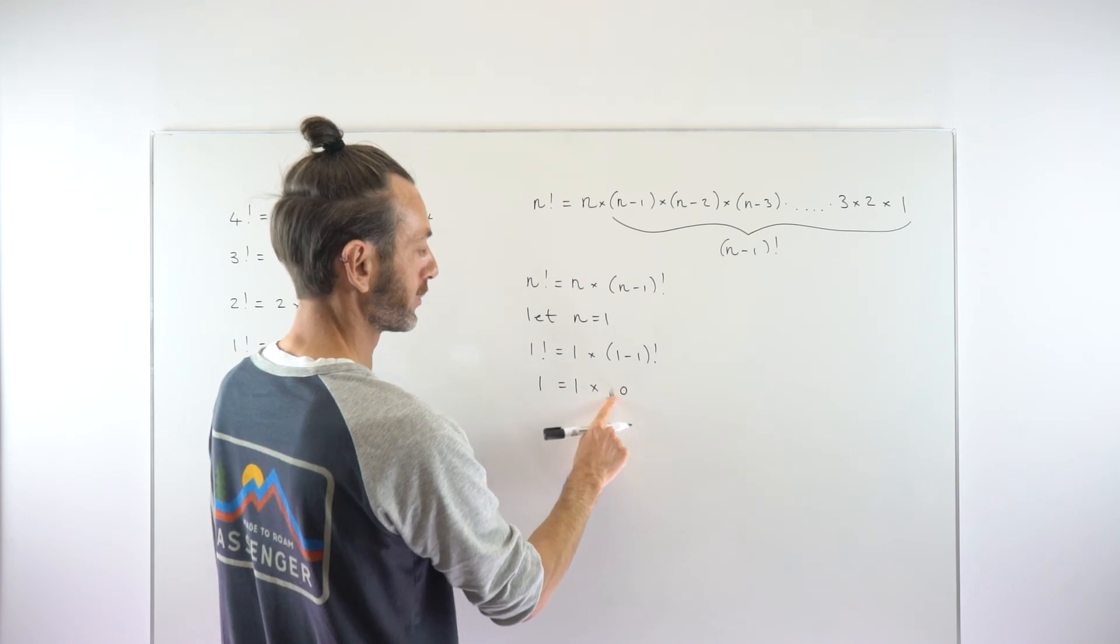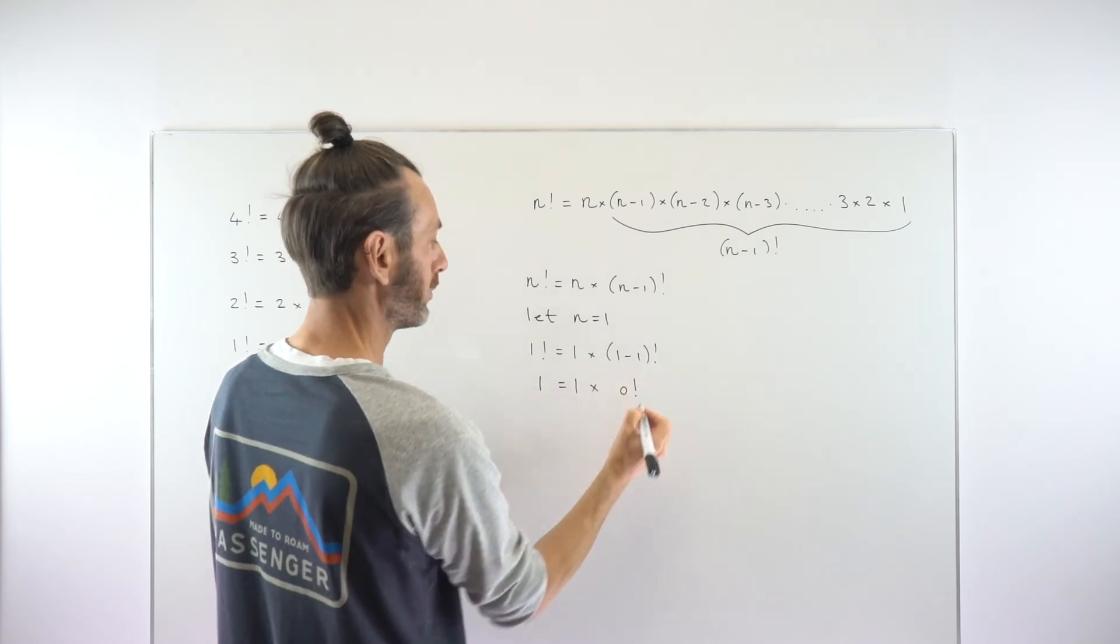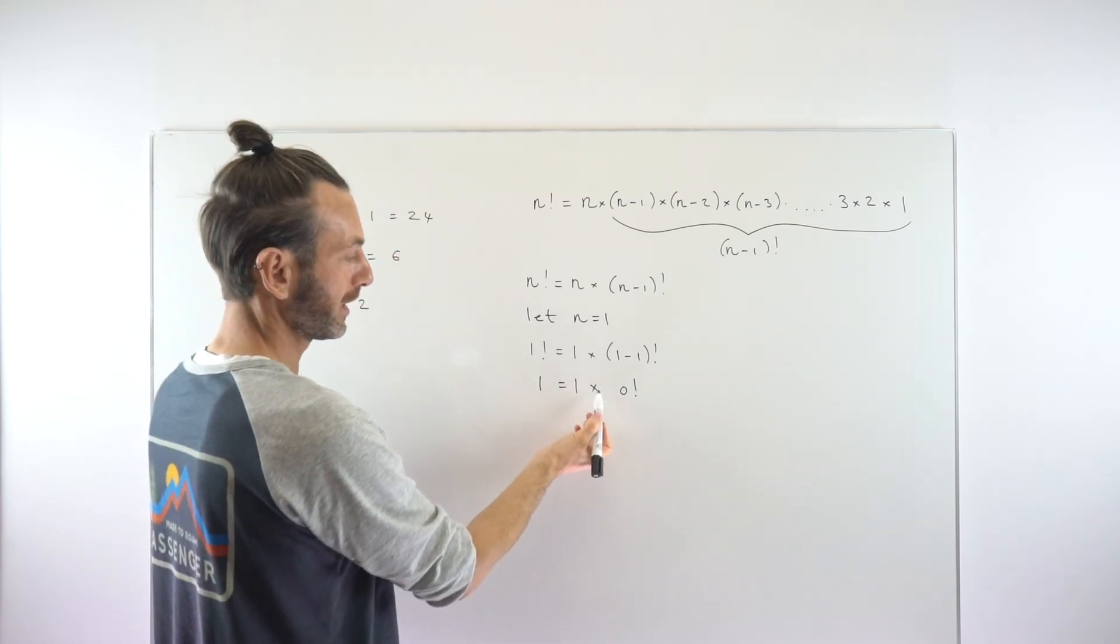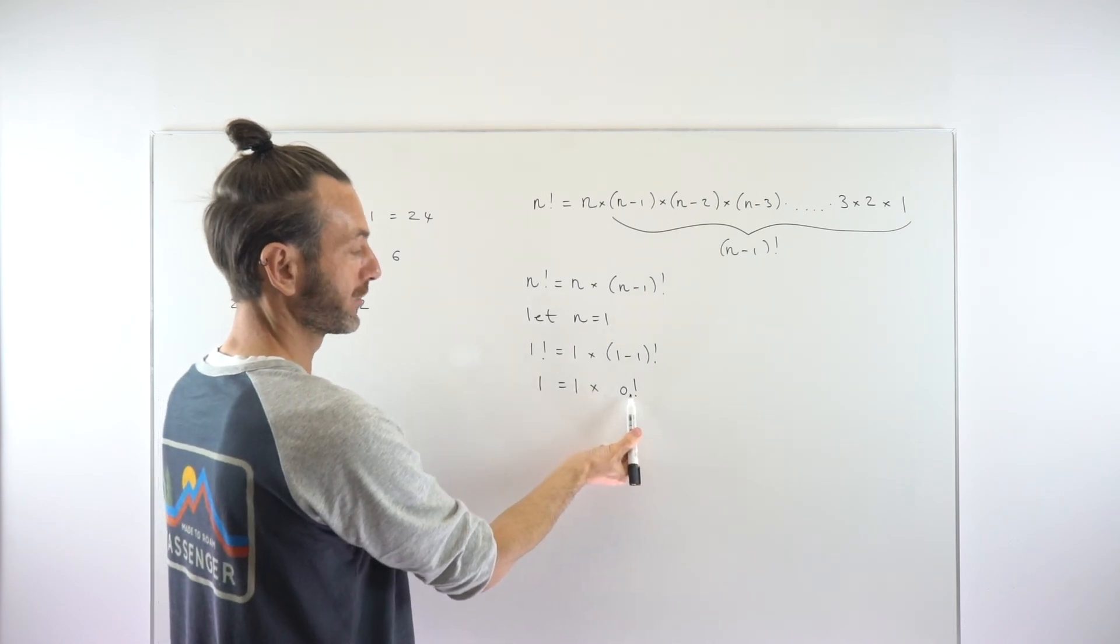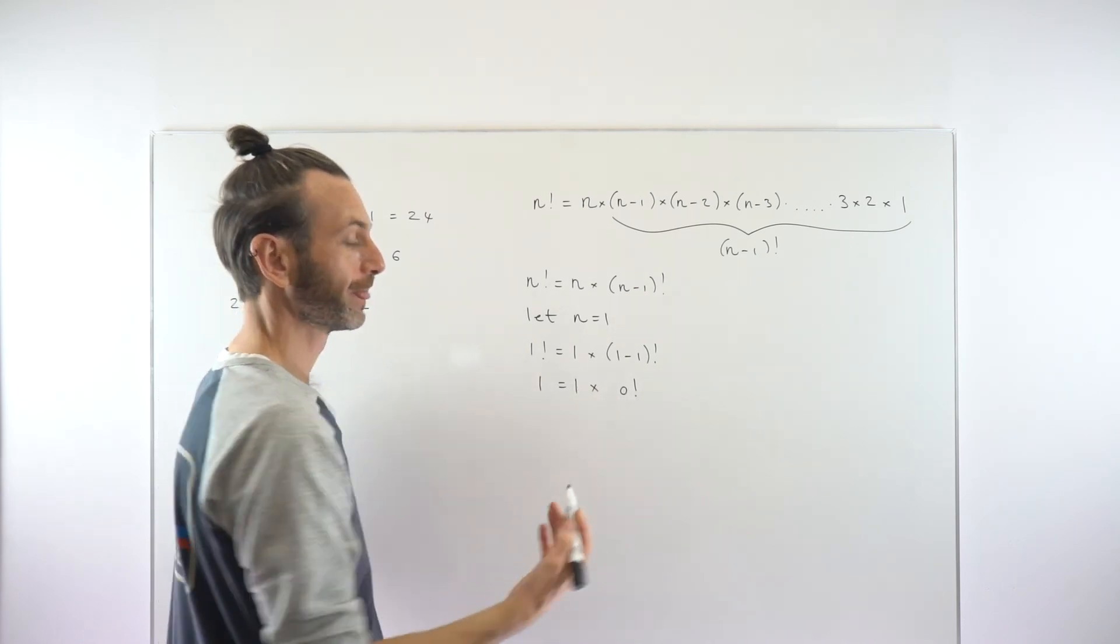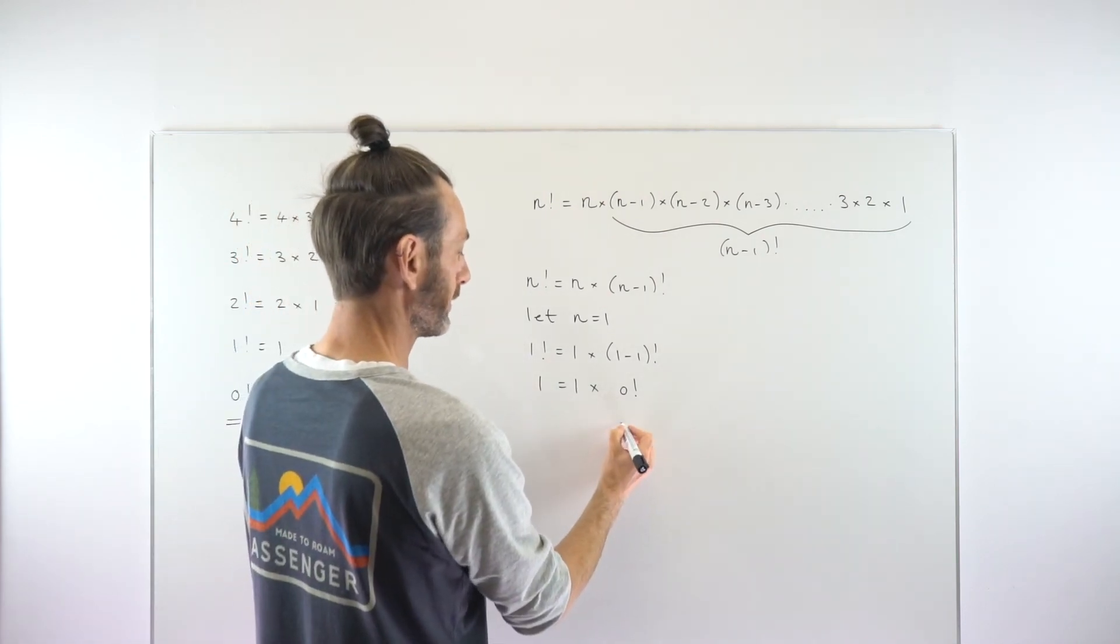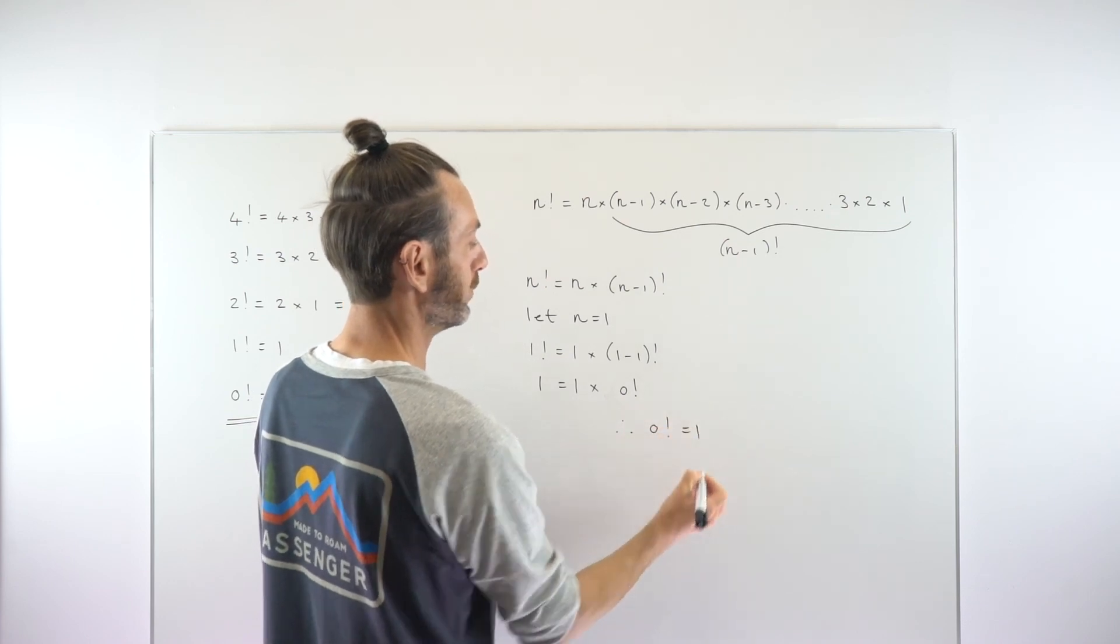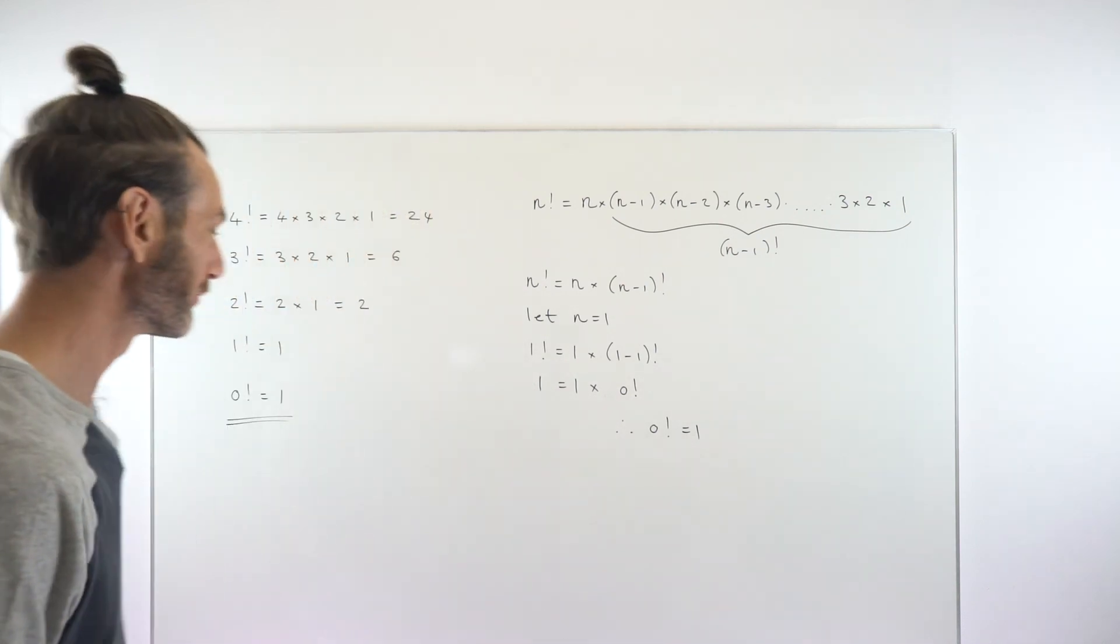Probably don't even need the bracket anymore. Let's just take that out. So that is just going to become 0 factorial. But if you look at what we've got here, we've got 1 equals 1 times something. Well, 1 can only be equal to 1 times 1. So the only thing that this can be is 1. So that tells us, basically, in conclusion, that 0 factorial has to equal 1 to satisfy this equation. So it seems really weird, but that's one of the ways we can prove it.